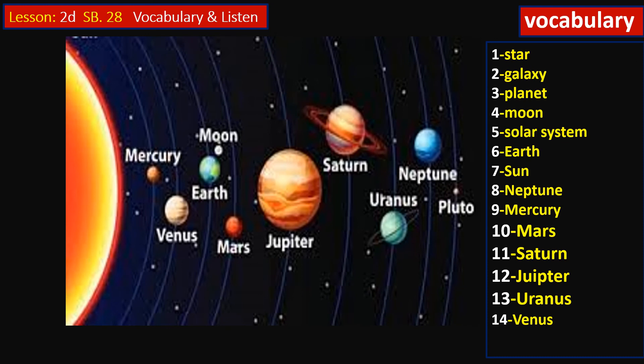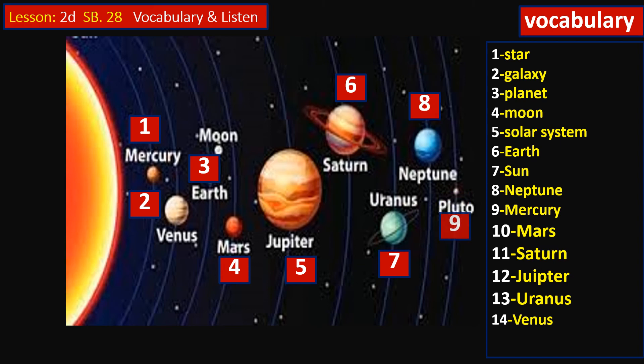That's what we call the solar system. These are the planets in the solar system. Have a look at this one. Try to remember them: number one Mercury, then Venus, Earth, Mars, Jupiter, Saturn, Uranus, Neptune, then we have Pluto.